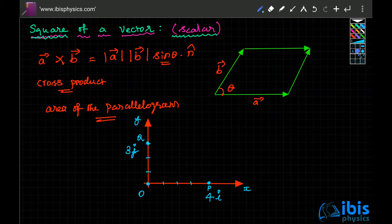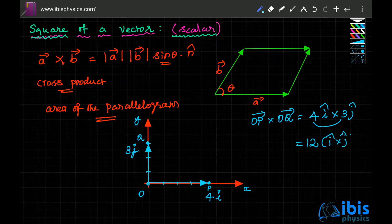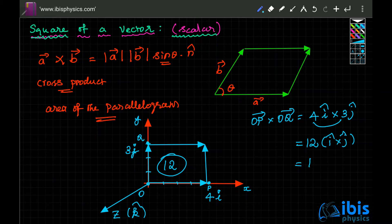Vector OP is 4i-cap and vector OQ is 3j-cap. So OP cross OQ equals 4i-cap cross 3j-cap, which is 4 × 3 = 12, and i cross j gives k-cap. This forms a rectangle with area 12, and the direction is along the z-axis, so the result is 12k-cap.